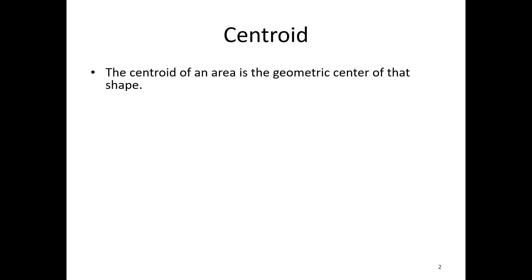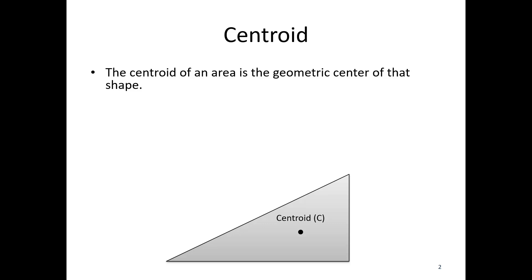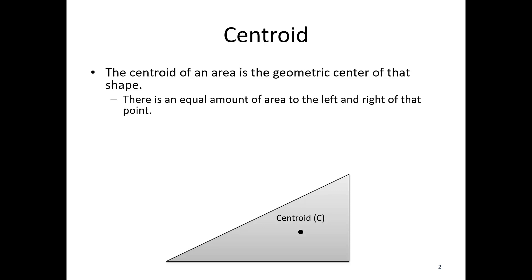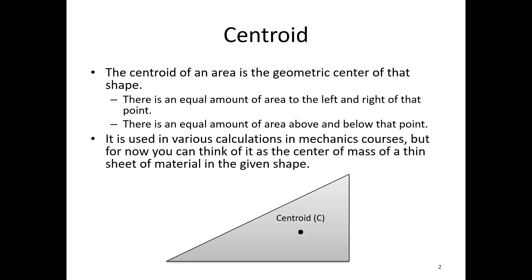The centroid of an area is the geometric center of that shape. It's going to be a point in space — for a triangle, that point marks the centroid, and generally we use the letter C to indicate it. There's an equal amount of area to the left and right of that point, and an equal amount of area above and below that point. That's what geometric center means in this case. It's used in various calculations in mechanics courses, but for now you can think of it as the center of mass of a thin sheet of material for that given shape.